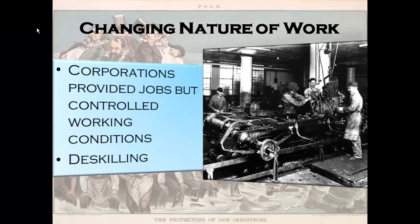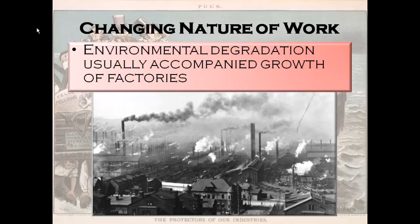The changing nature of work also shows the effects of corporations. Corporations provided jobs but controlled the working conditions. Profits were not passed on to workers in the form of higher wages. At one U.S. Steel plant from 1907 to 1910, one of every four workers were killed in some type of industrial accident. Profits were put back into the company, not passed on to workers. De-skilling — through new technologies, new workers, and workplace reorganization — eliminated skilled artisans, leaving workers with no marketable skills and no bargaining chip for fair wages. Workers were sharing little of the wealth of this time period.